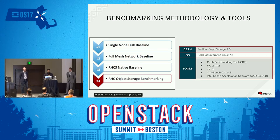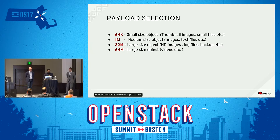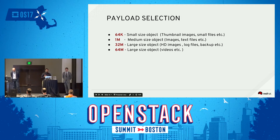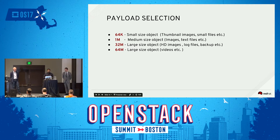We used Red Hat Ceph Storage 2.0, which is based on Jewel, on standard RHEL 7.2, and Intel CAS Acceleration Software version 3.0.1, which was the latest available at the time. For payload selection, we tested a couple of different object sizes to mimic real-world workloads: 64K representing small images and small files, and larger block sizes — 1 MB, 32 MB, and 64 MB — mimicking large images, text files, backup files, and videos.